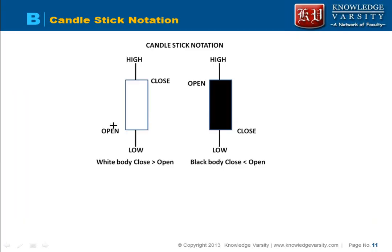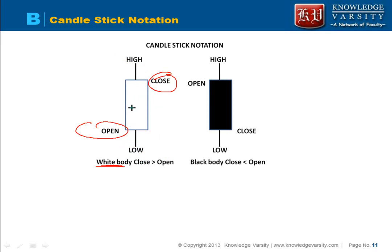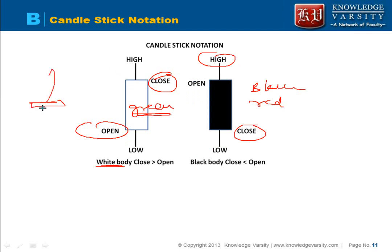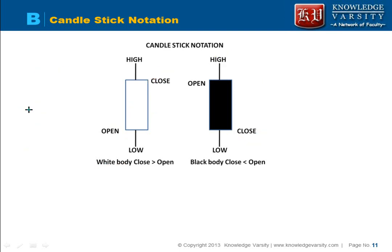The candlestick chart was founded by the Japanese and has been used since the 1600s in the rice futures market. It is similar to the bar chart but looks like a candle with a wick. It shows the open, close, high (maximum price), and low (minimum price). If the close is more than the open, it is a white or green body; if the close is less than the open, it is a red or black body.